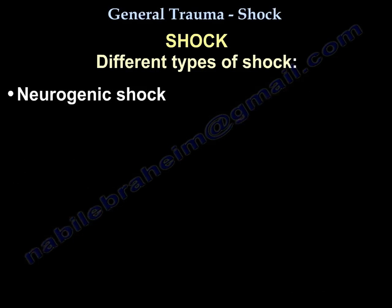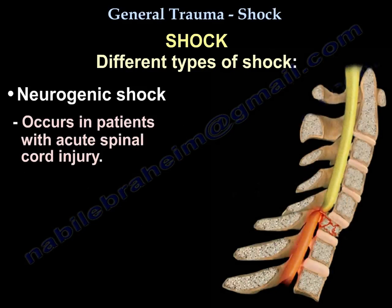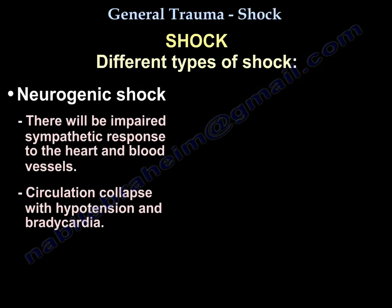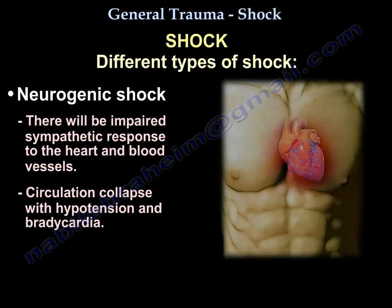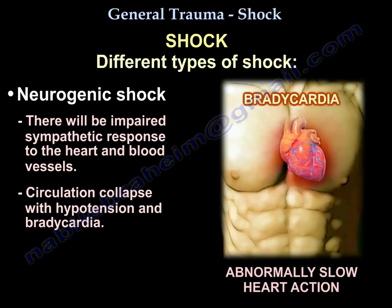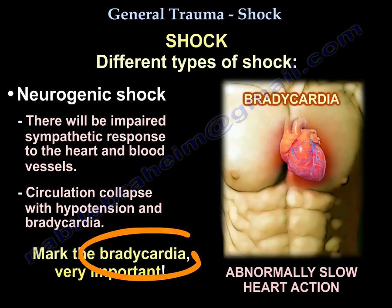Then you have neurogenic shock, which occurs in a patient with acute spinal cord injury. There will be impaired sympathetic response to the heart and to the blood vessels. There will be circulatory collapse with hypotension and bradycardia — mark the bradycardia, very important.